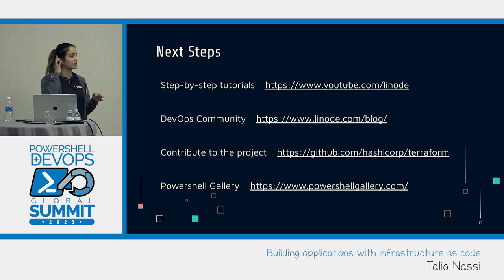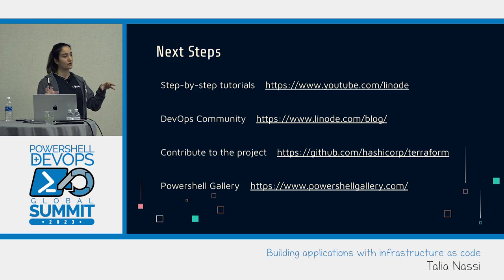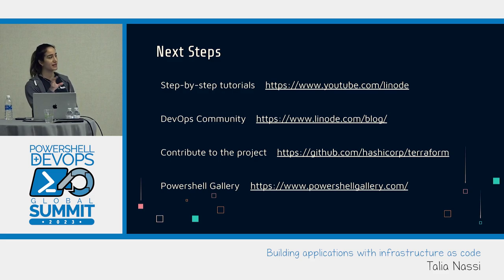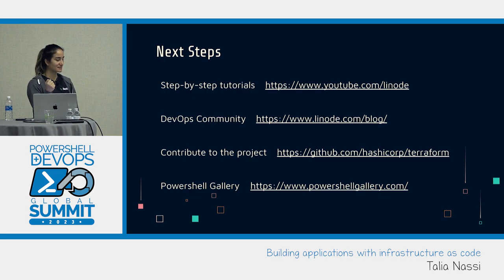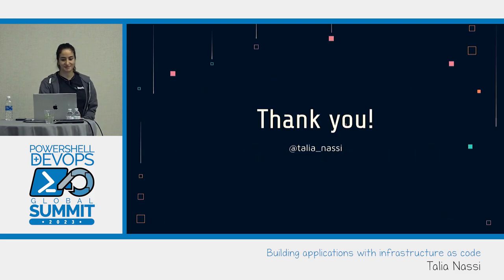There are a ton of different ways to learn how to use infrastructure as code. First, figure out which tool you'd like to use — all of them have resources online. There's the GCP and Terraform documentation together — when you go to Google's infrastructure as code site, they use Terraform, so that's an option. If you're using AWS, there's the serverless registry. And there's our DevOps community at Linode — you can check out the blog. That's all I have. Thank you, everybody.